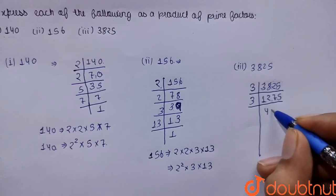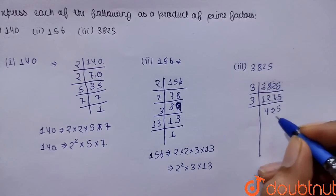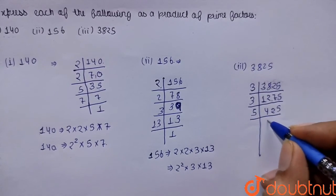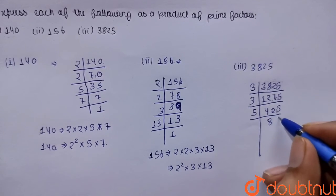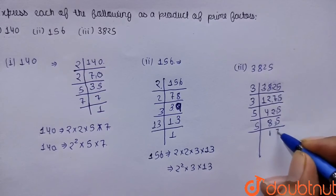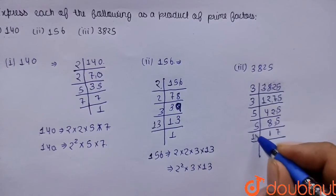So 3, 4s are 12, 3, 2s are 6 and 3, 5s are 15. Now it is divisible by 5. 5, 8s are 40 and 5, 5s are 25. Again 5, 5, 1s are 5, 5, 7s are 35. 17 is prime number.